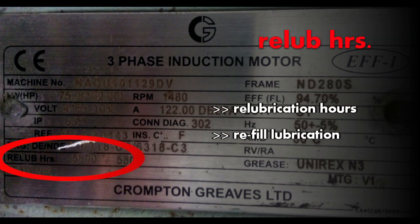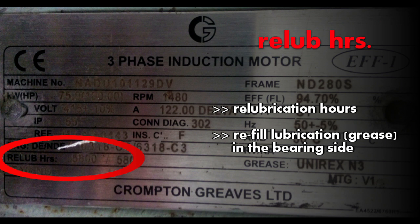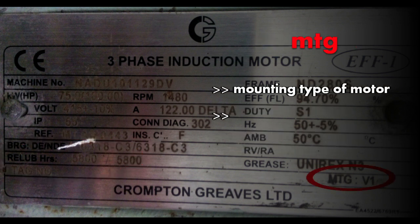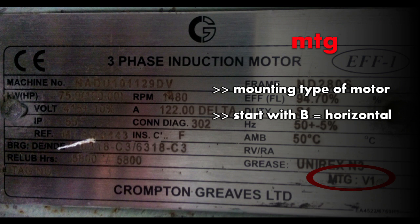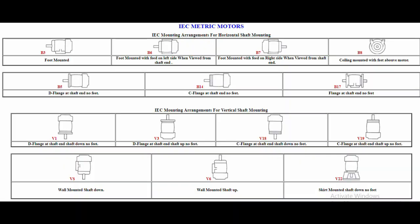Next comes the relube hours or relubrication hours. These are the number of hours after which you have to refill lubrication in the bearing side. It may be a grease. Next comes the MTG, that is mounting. It shows the mounting type of the motor. As you can see in the image, all the mounting types starting with B are the horizontal mounting, while the mounting starting with V are the vertical mountings.